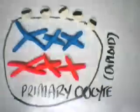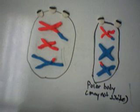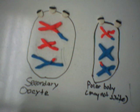Primary oocyte, diploid. Independent assortment and crossing over in meiosis 1. After meiosis 1, two cells are created. One is a polar body, which may or may not divide again, resulting in more polar bodies. But the other one is the secondary oocyte, which is significantly larger and will eventually become a mature egg.